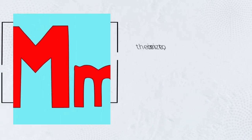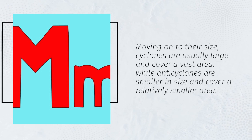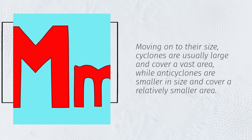Moving on to their size, cyclones are usually large and cover a vast area, while anticyclones are smaller in size and cover a relatively smaller area.